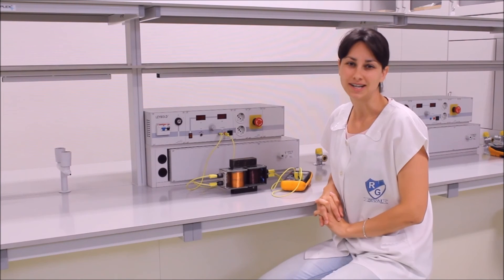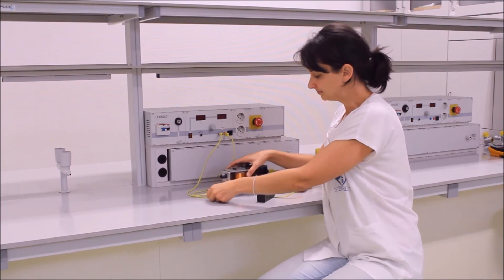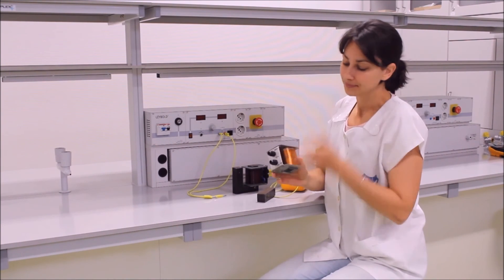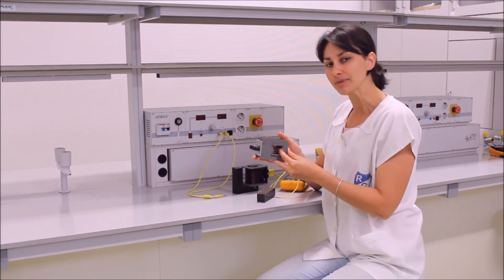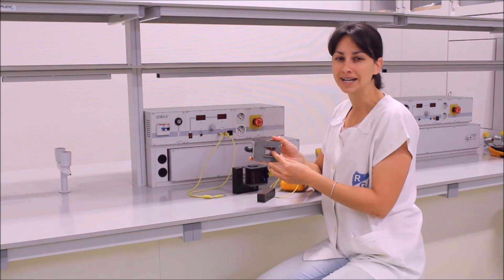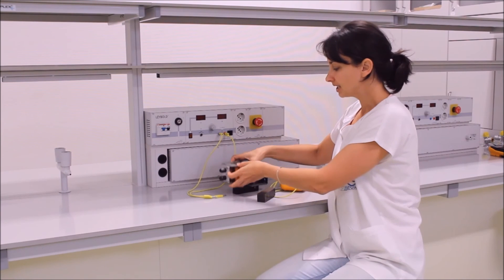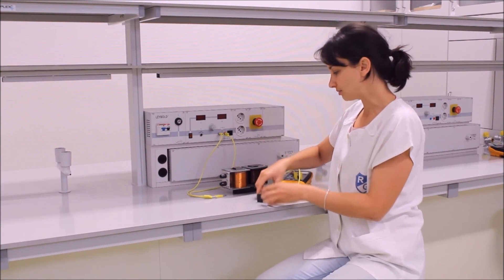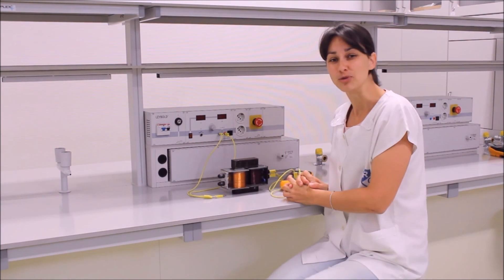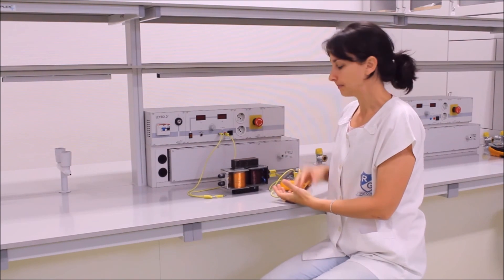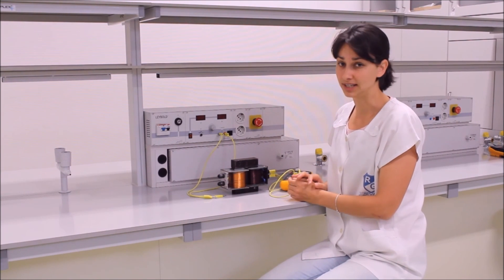Nézzük a jelenségmagyarázatát. Ha egy tekercsre váltakozó feszültséget kapcsoljuk, akkor a tekercsben és körülötte változó mágneses mező jön létre. A tekercs belsejében közel homogén ez a mező, tehát közel párhuzamosak egymással a mágneses indukcióvonalak. Kívül viszont szóródik. A közös vasmag segítségével szinte körbevezetjük ezt a mágneses mezőt, így a másik tekercs is egy változó mágneses mezőben van. A változó fluxus a tekercsben ezáltal feszültséget indukál. Ezt a feszültséget nevezzük szekunder feszültségnek.